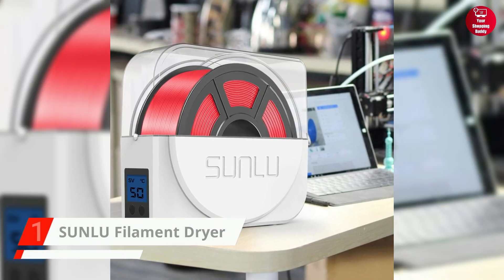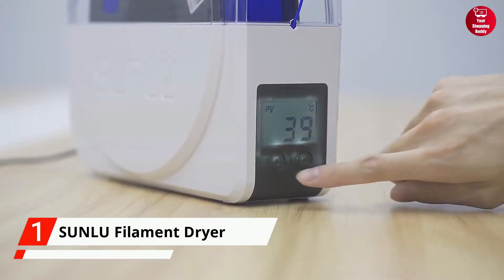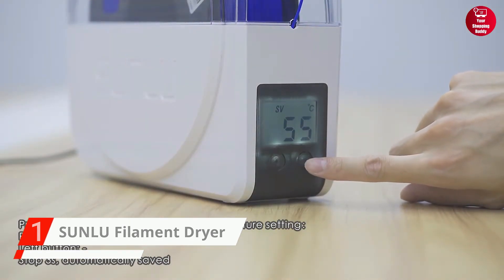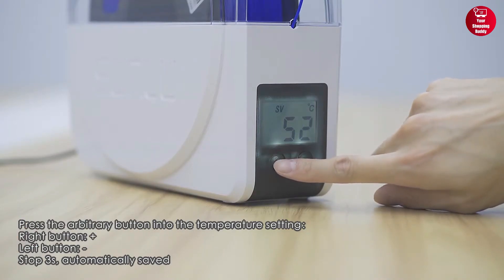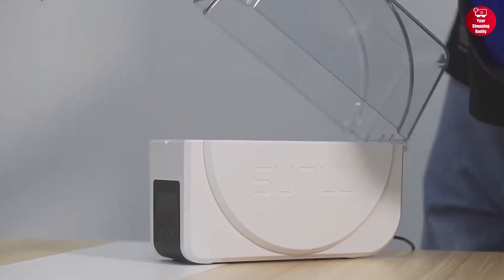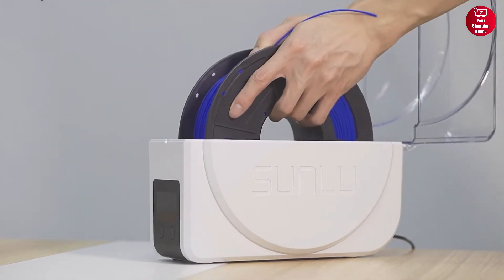Finally, at number one, we have the Suenlu Filament Dryer. The dryer has an adjustable temperature range from 35 to 55 degrees Celsius and it is suitable for more than 20 kinds of 3D printing.